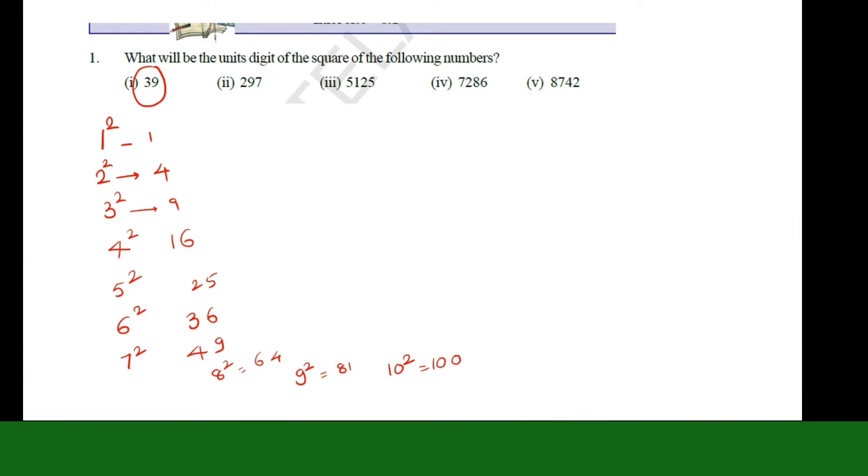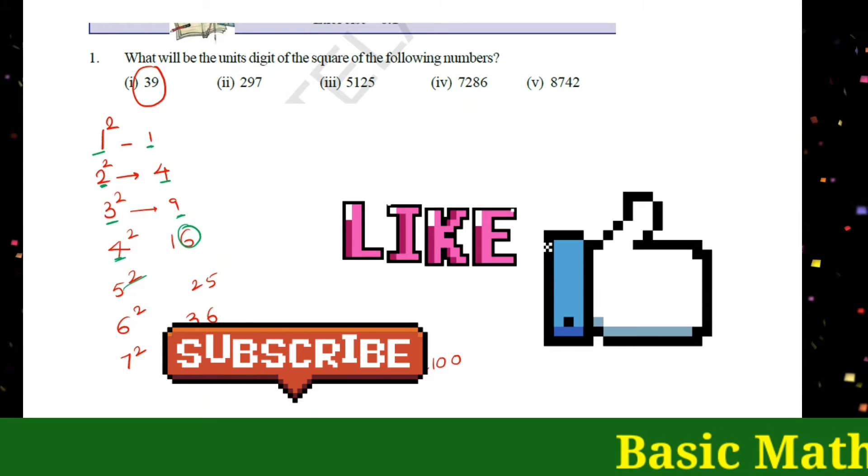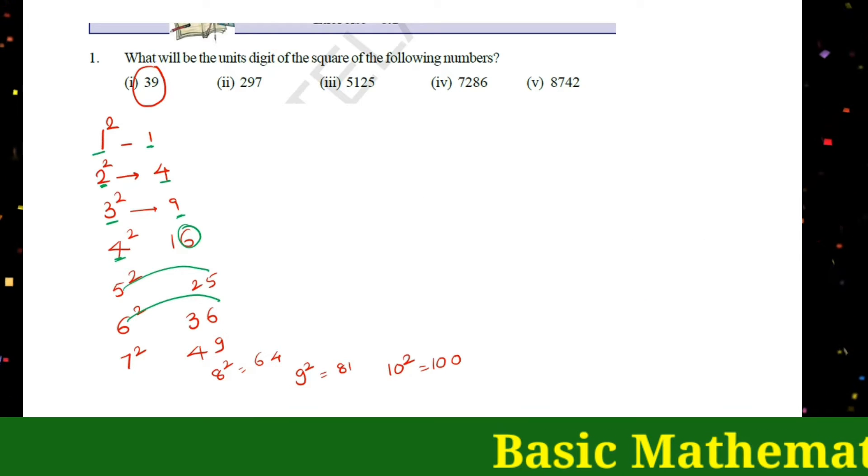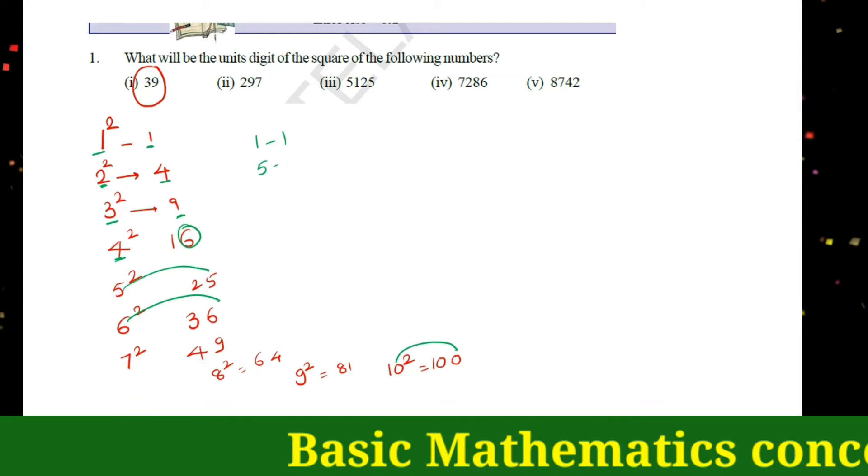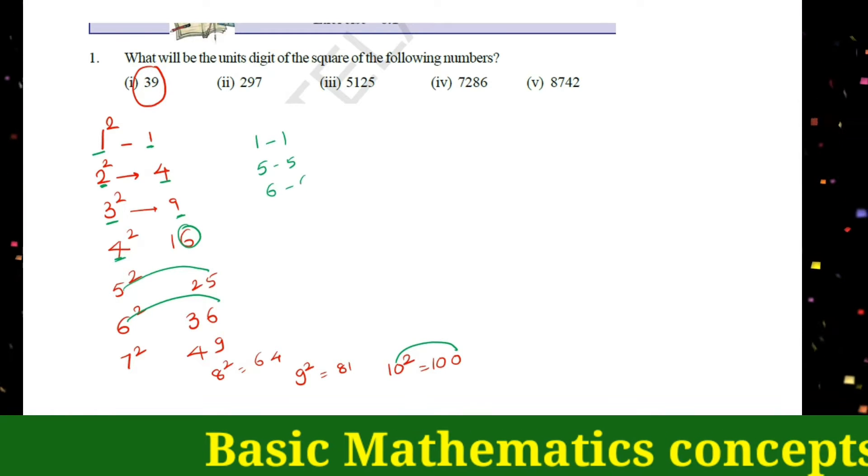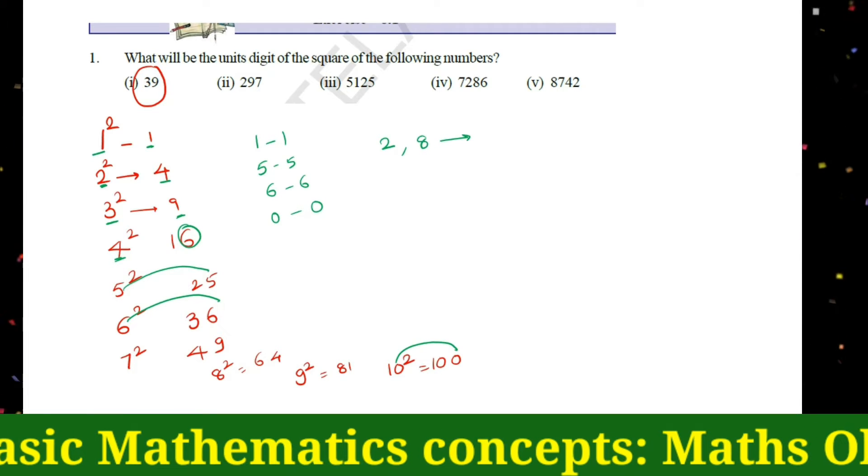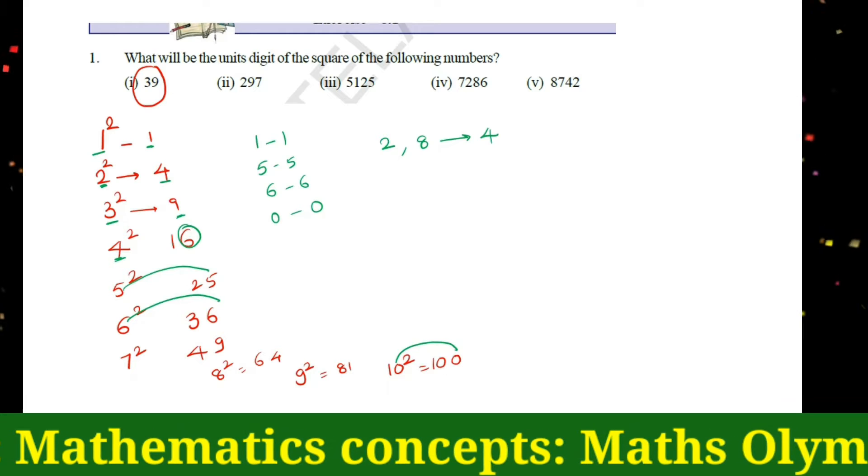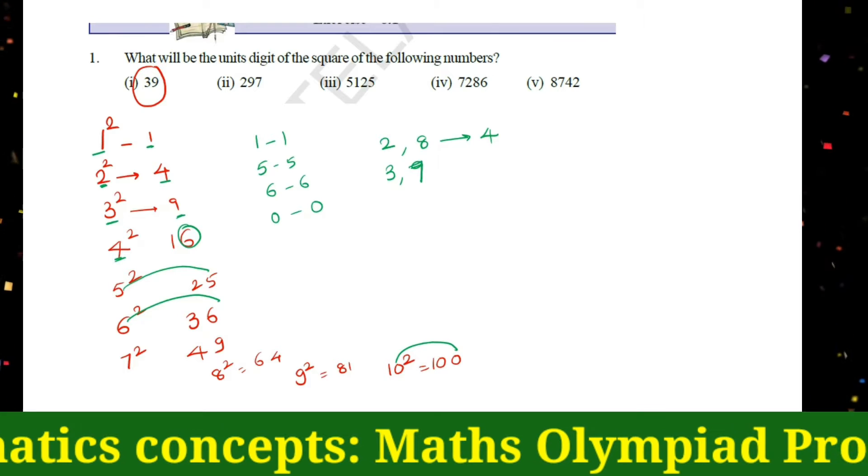Observe the number and square of the number unit place: 1 is 1, 2 is 4, 3 square 9, 4 is 6, 5 is 5, 6 is 6, and 0 is 0. Next thing, 2 and 8: if unit place is 2 or 8, then square number is 4. And 3 and 7 give 9.